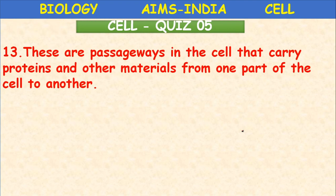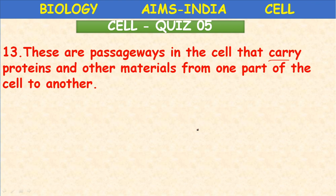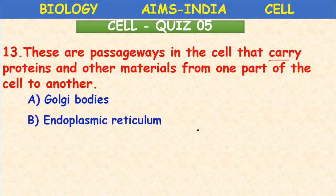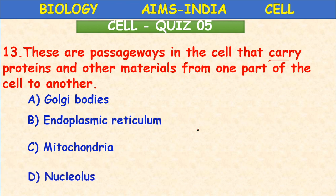These are passageways in the cell that carry proteins and other materials from one part of the cell to another — Golgi bodies or endoplasmic reticulum? The right answer is endoplasmic reticulum, which performs cellular transport.